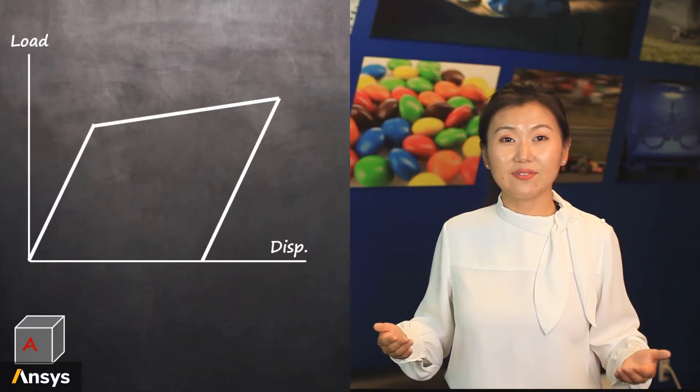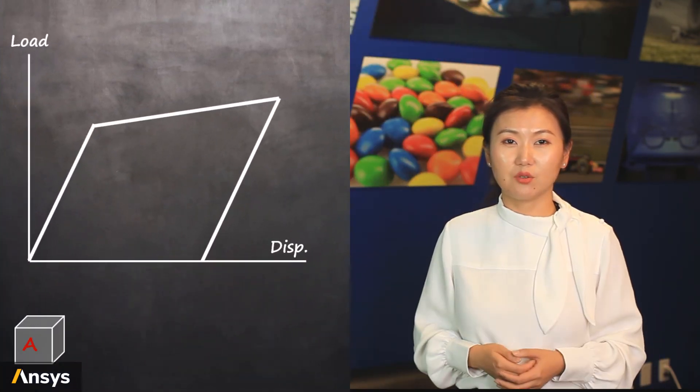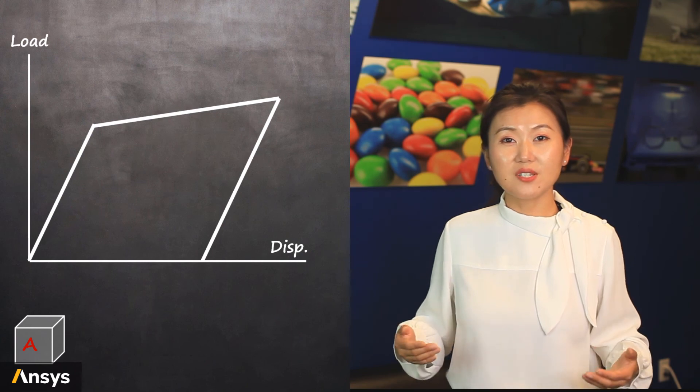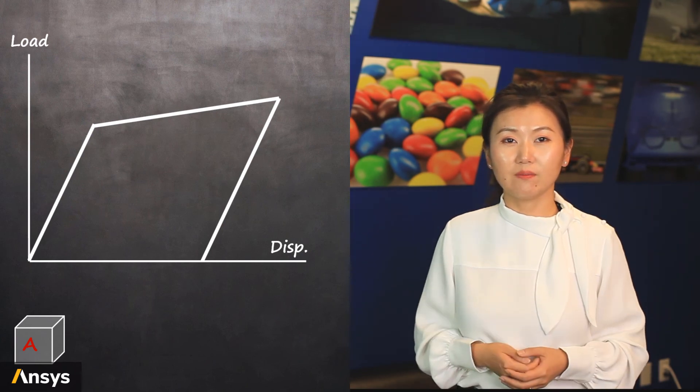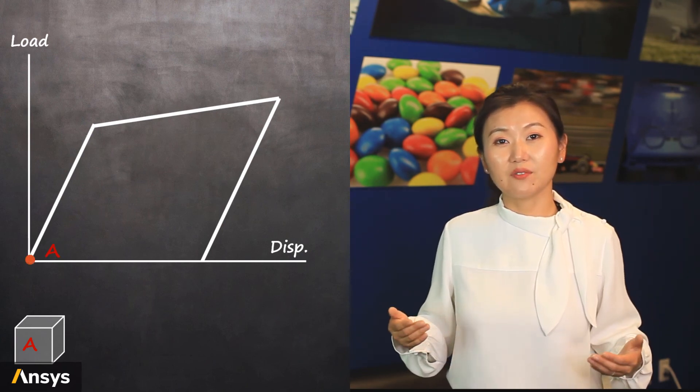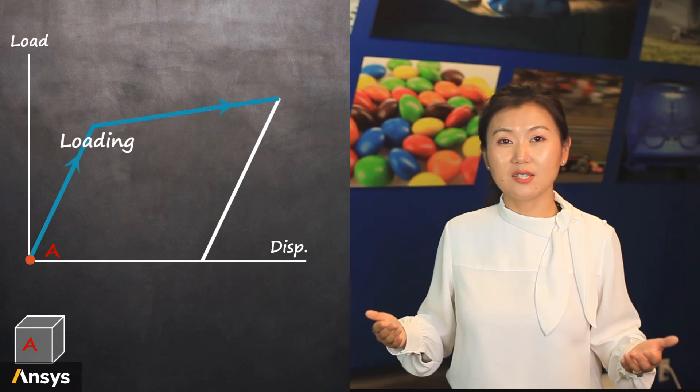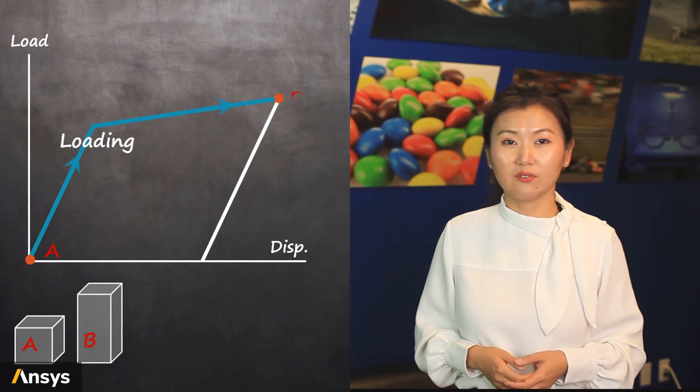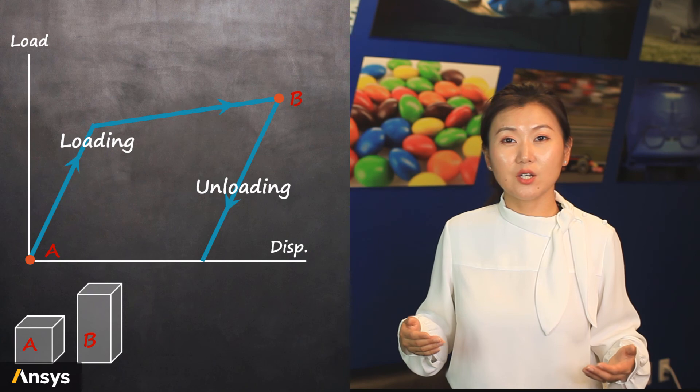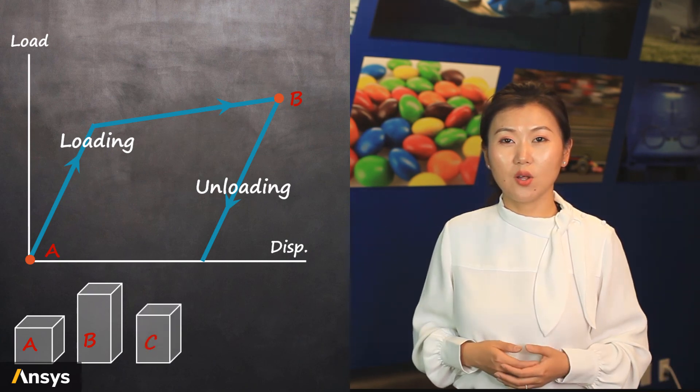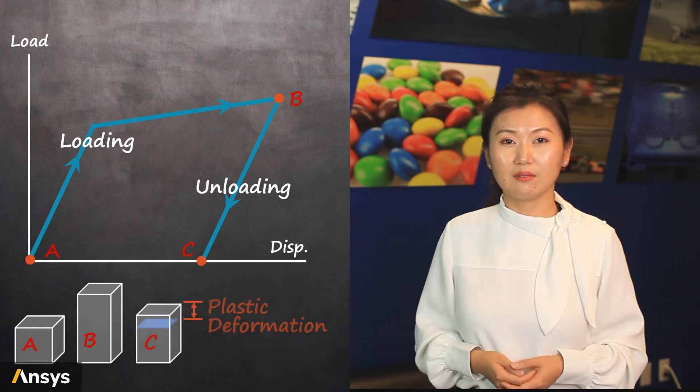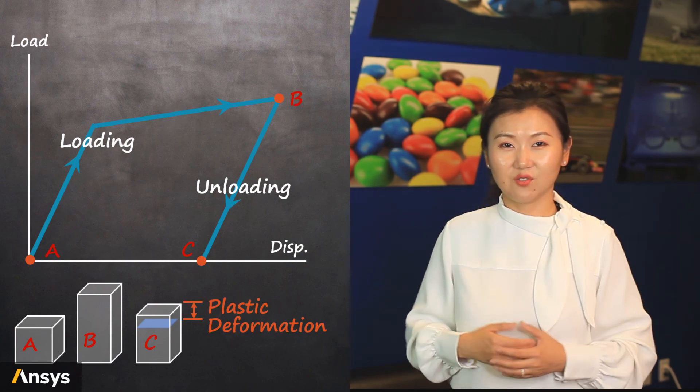Let's have a look at this simple cube made of plastic material under cyclic loading. The deformation versus load curve is plotted here. We can find corresponding configuration of the body for the red dots at the deformation versus load curve. And you can see that when the load comes back to zero, there's amount of deformation that remains in the body. And this is the plastic deformation.